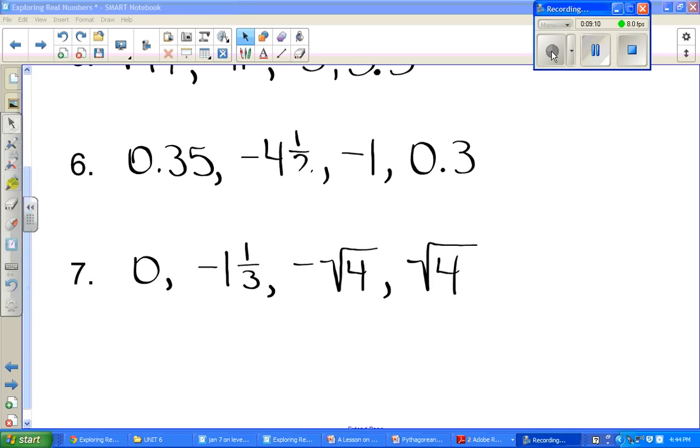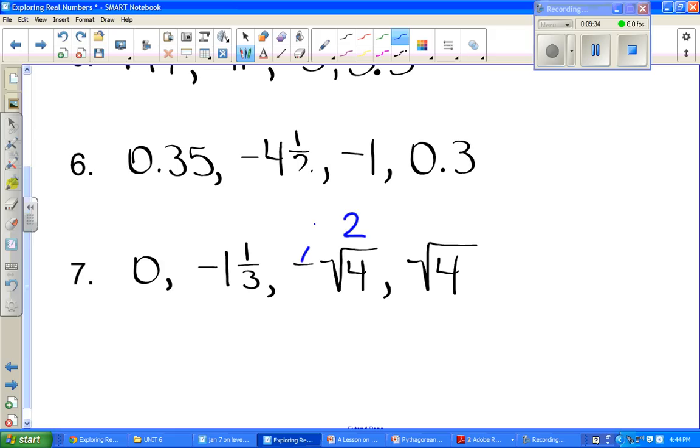Then number 7. We have 0. 0 is pretty obvious. We know where that's going to be on the number line. And then we have negative 1 and 1 third, negative square root of 4, and positive square root of 4. So let's go ahead and simplify that negative square root of 4. Negative square root of 4. Square root of 4 is 2. So that's going to simply be negative 2. And then square root of 4 is going to be a positive 2. And I think with this, we can go ahead and graph this without even changing it to a decimal.